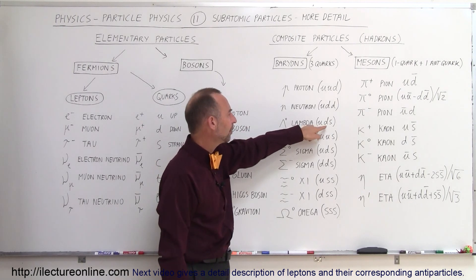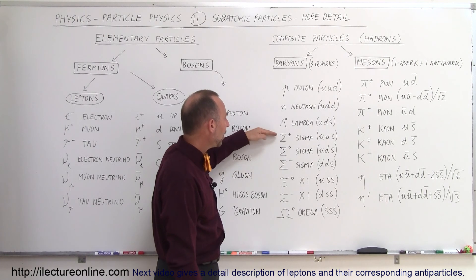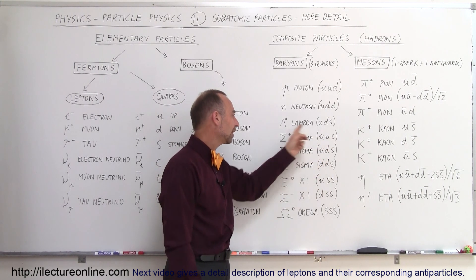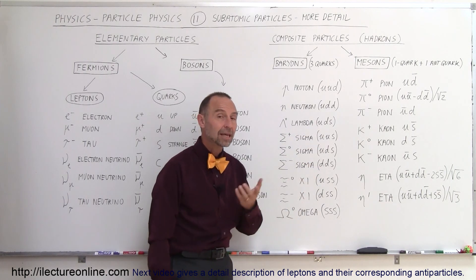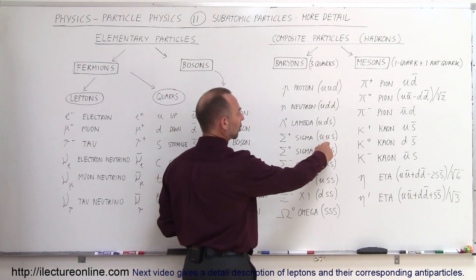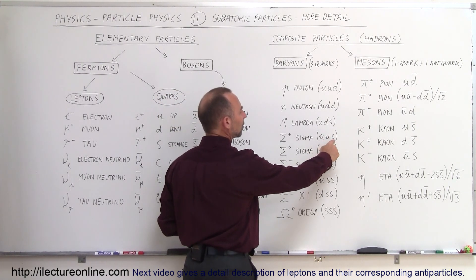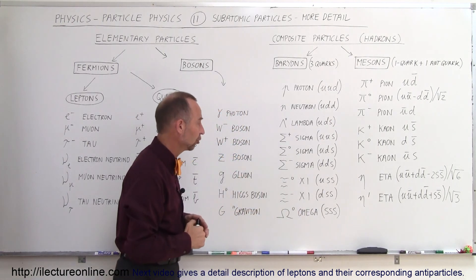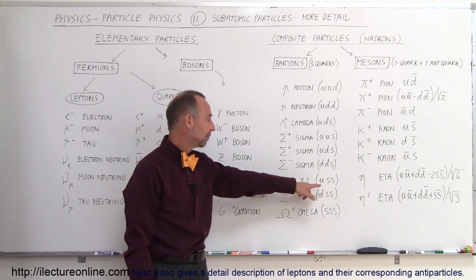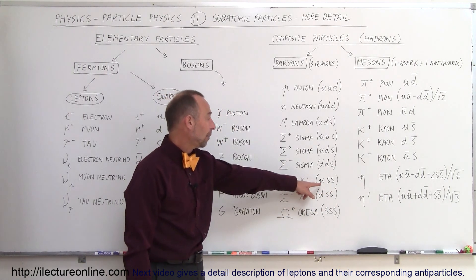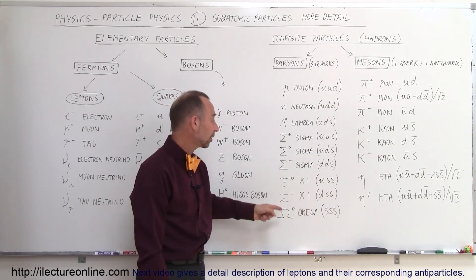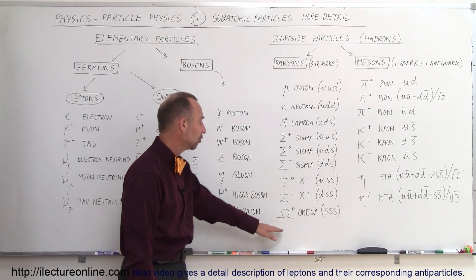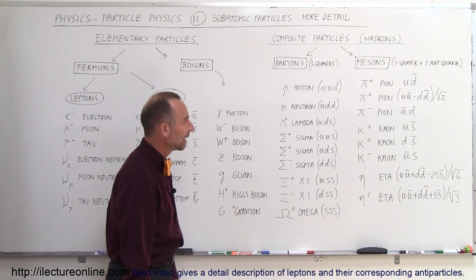We also have the lambda particle, made up of an up, a down, and a strange quark. Then there are three sigma particles — positively charged, neutral, and negatively charged — made of up-up-strange, up-down-strange, and down-down-strange respectively. By knowing their charges, we can figure out the strange quark has a −1/3 charge, just like the down. Then we have the xi particles made of up-strange-strange and down-strange-strange. Finally we have the omega, made up of three strange quarks.